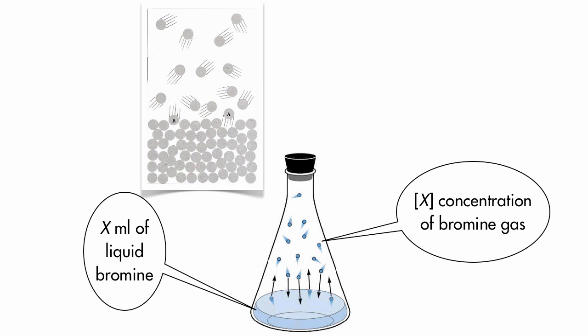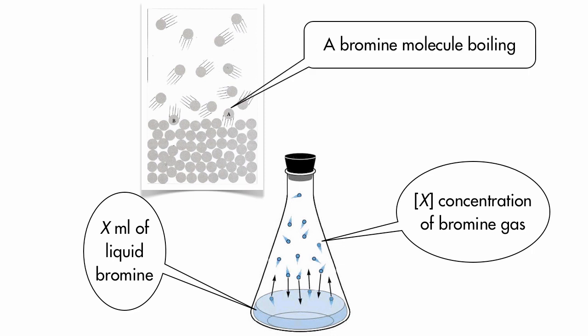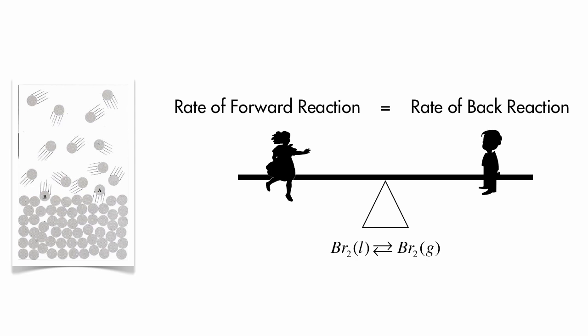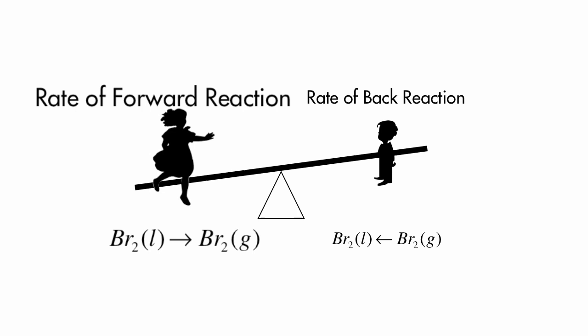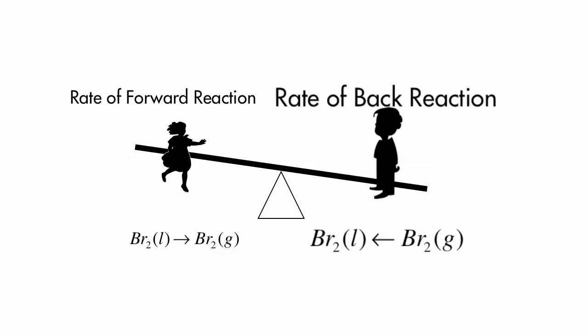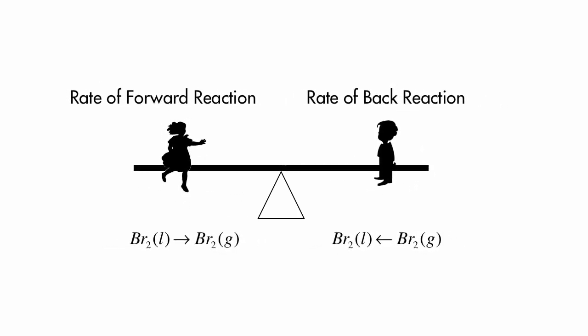In equilibrium, the rates of the two reactions are equal. So for every bromine molecule that boils, a molecule of bromine is condensing. From our macroscopic view, we don't see any change. There you have it. Dynamic equilibrium is when reactions are still going. They are dynamic. But the opposing reaction rates, the rates of the forward and back reactions, are equal. So we see no overall change.